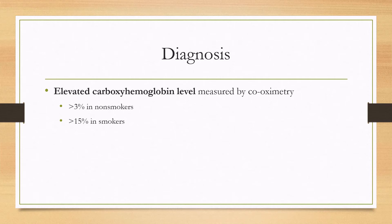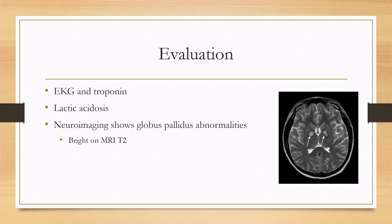The diagnosis has to be suspected based on risk factors and predisposing history. If you suspect carbon monoxide poisoning, the way to diagnose it is to measure the carboxyhemoglobin level by co-oximetry. Above 3% in non-smokers is abnormal, and above 15% in smokers is abnormal, confirming the diagnosis. An EKG and troponin are also sent to evaluate for myocardial ischemia.